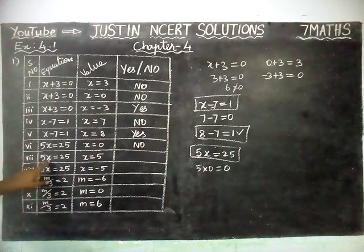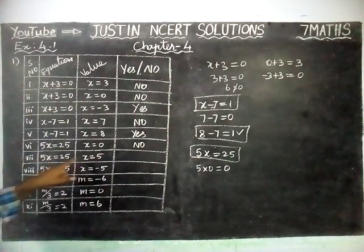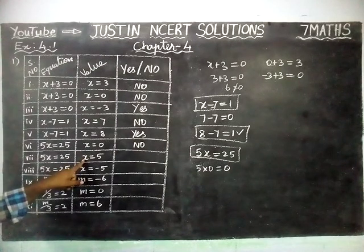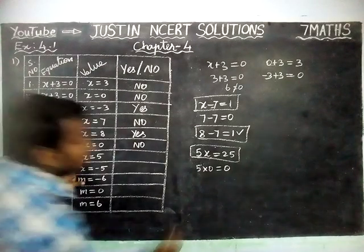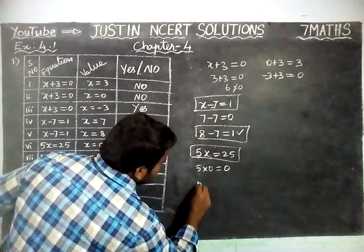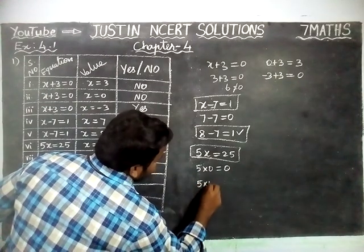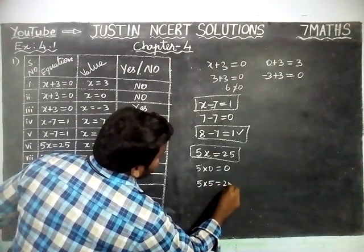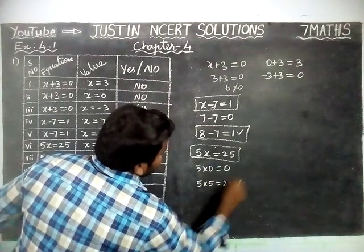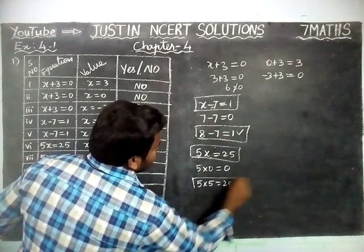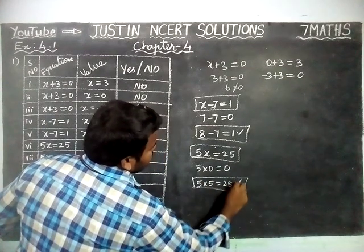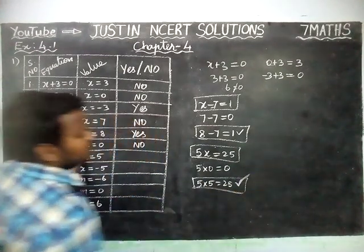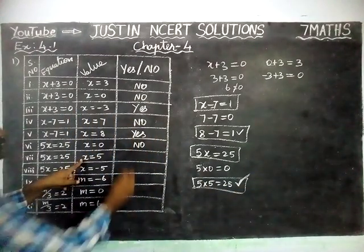Next question: 5X equal to 25, X value is equal to 5. So 5 into 5 is equal to 25 — it is satisfied. So this is yes.